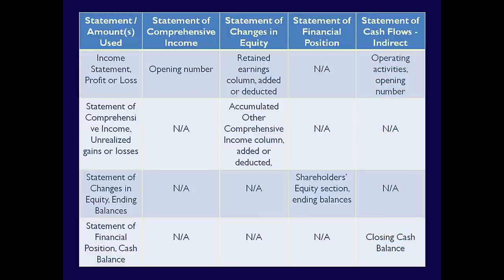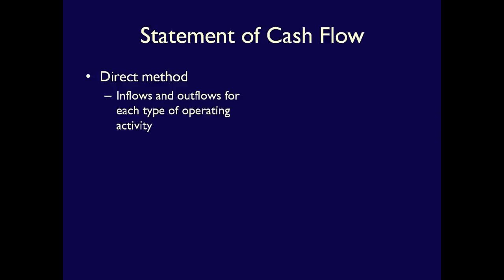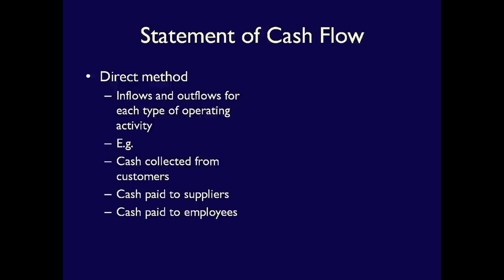Although you don't have to use a matrix to understand the interconnection between the various financial statements, it is one way to understand this concept. The Statement of Cash Flows can be prepared using the Direct or Indirect method. The Direct method lists the inflows and outflows from each type of operating activity a company performs. Cash flow categories can include cash collected from customers, cash paid to suppliers, and cash paid to employees. This method is preferred by IFRS because it is more informative for users, clearly showing the sources and uses of cash in operations.